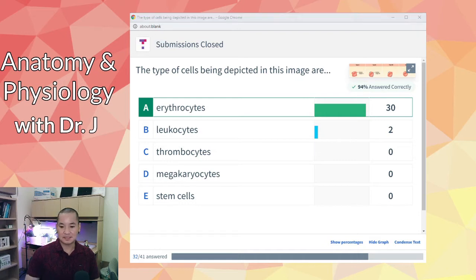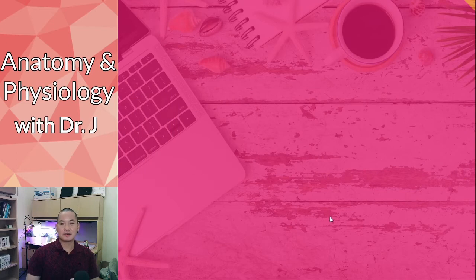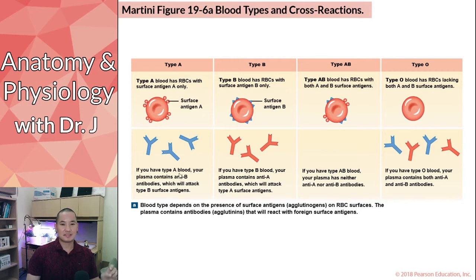Leukocytes have many different types of antigens on their surface, and so do platelets. But of your formed elements — the cells in your blood — red blood cells make up the vast majority, which is why they are the most important determinant of your blood type.